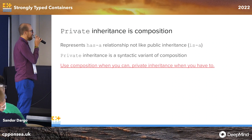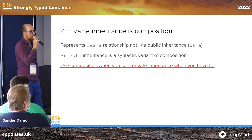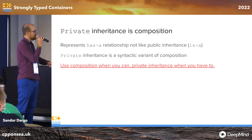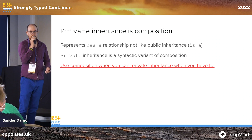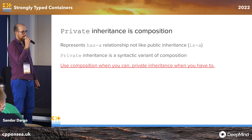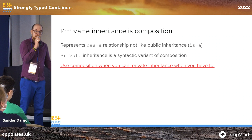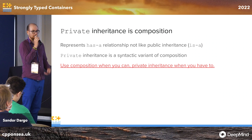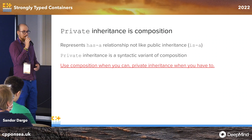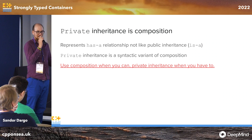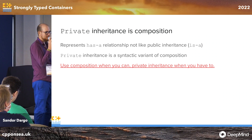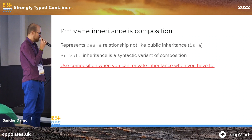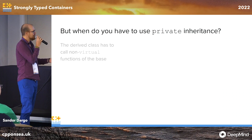Should we use that other way? The core guideline says: whenever you can, use composition, and use private inheritance only when you really have to. There is an example behind that link from the core guidelines — I don't find it very readable, but I couldn't come up with a better use case myself either, because it's not so frequent that you really have to use private inheritance.